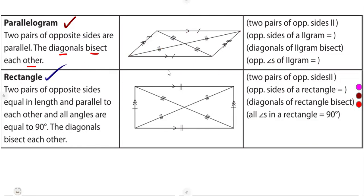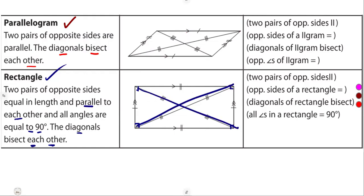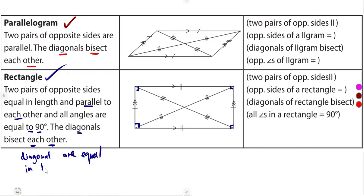A rectangle: it has two pairs of opposite sides that are equal in length and parallel to each other. All angles are equal to 90 degrees — each interior angle is 90 degrees. The diagonals bisect each other, just like a parallelogram, and on a rectangle the diagonals are also equal in length.